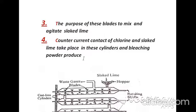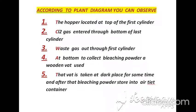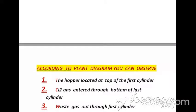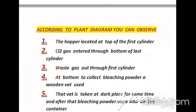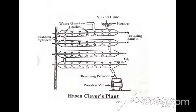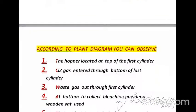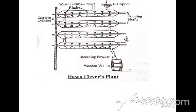The materials contact each other through counter-current contact for good mixing. In the diagram labeling, the first point is the hopper located at the top of the first cylinder. The next point is that chlorine gas enters through the bottom of the last cylinder — you can observe the entering place where chlorine enters.